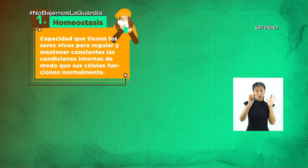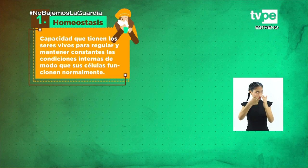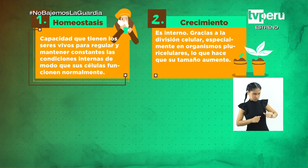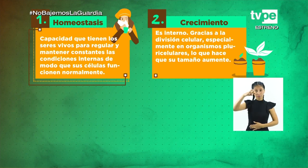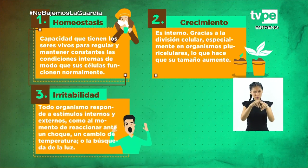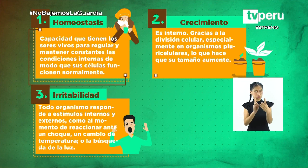¿A qué otras características hay? Tenemos la homeostasis, que es la capacidad que tienen los seres vivos para regular y mantener constantes las condiciones internas de modo que sus células funcionen normalmente. Estoy sano y sin fiebre. La siguiente es el crecimiento, que es interno, gracias a la división celular, especialmente en organismos pluricelulares, lo que hace que su tamaño aumente. También presentan irritabilidad: todo organismo responde a estímulos internos y externos, como al momento de reaccionar ante un choque, un cambio de temperatura o la búsqueda de luz.